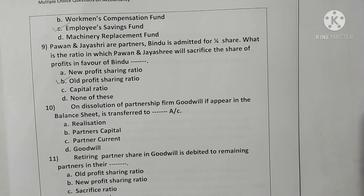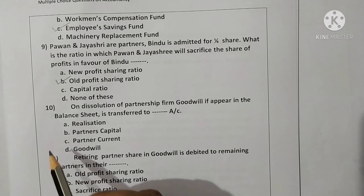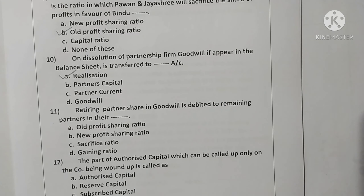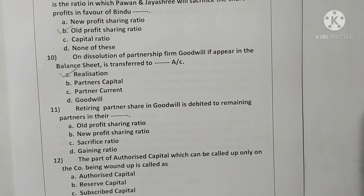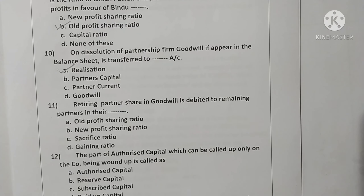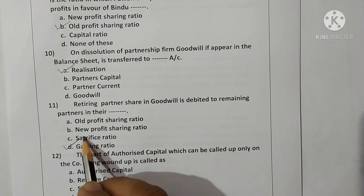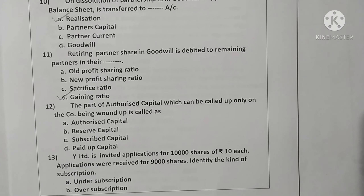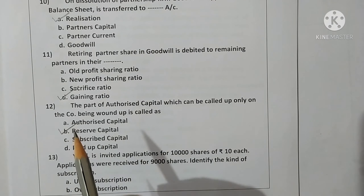Question ten: on dissolution of a partnership firm, goodwill appearing in the balance sheet is transferred to the realization account. Option A is correct. Question eleven: on retirement of a partner, goodwill is debited to remaining partners in their gaining ratio. Option B is correct.